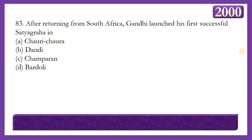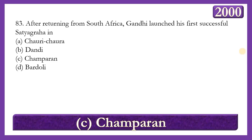Next question: After returning from South Africa, Gandhi launched his first successful Satyagraha in which place? Options: Chauri Chaura, Dandi, Champaran, or Bardoli. The answer is option C — Champaran. He returned from South Africa in 1915 and in 1917 launched his first successful Satyagraha at Champaran, against the Indigo Planters, at the insistence of Rajkumar Shukla.